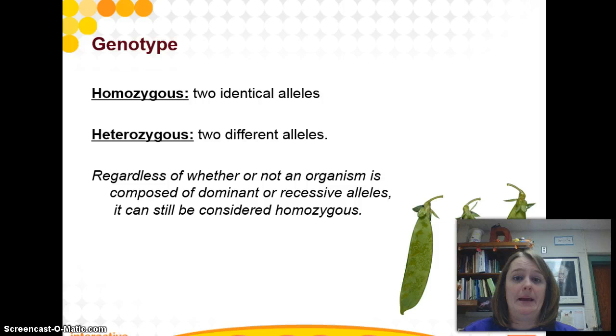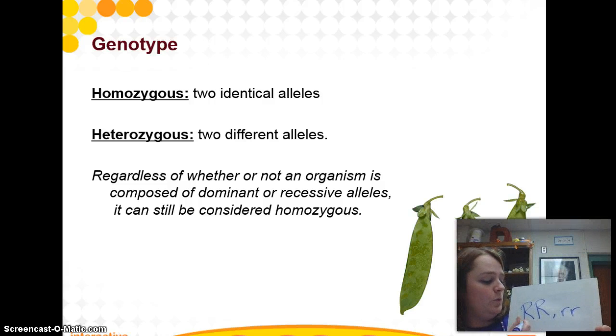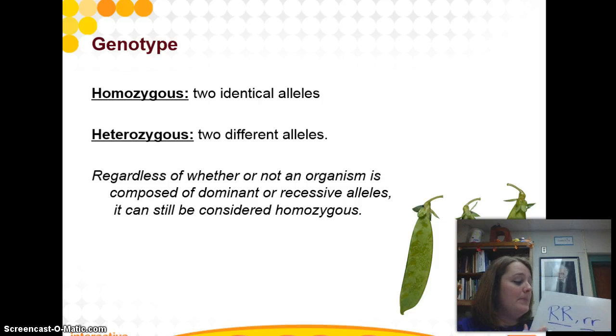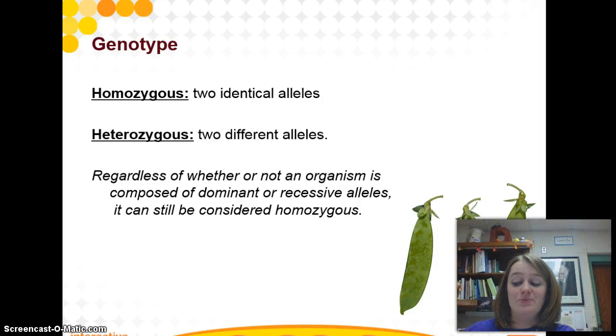To go back to genotype, there are two different genotypes that you can potentially have. You can have a homozygous genotype. A homozygous genotype would be where you have two of the same case alleles. So for example, you could have capital R, capital R, which would be homozygous dominant. Or you could have lowercase r, lowercase r, which would be homozygous recessive. Both of these have the same case letter representing them. This one has two capital letters representing the dominant trait, so homozygous dominant. This one has two lowercase letters representing the recessive trait, so homozygous recessive.